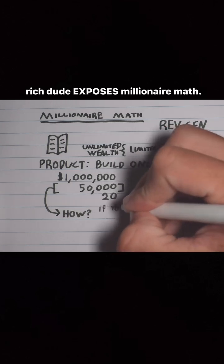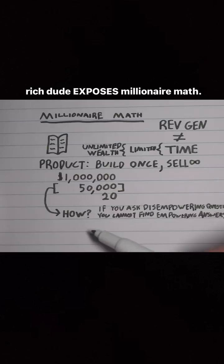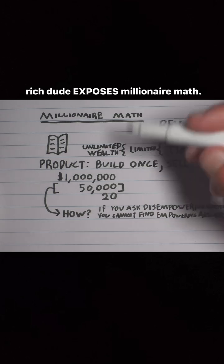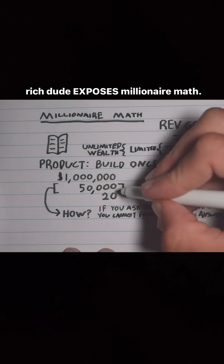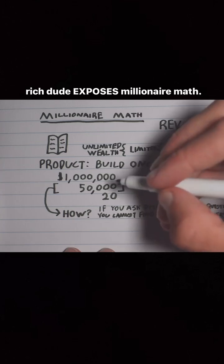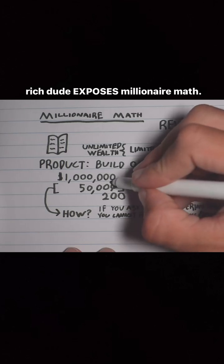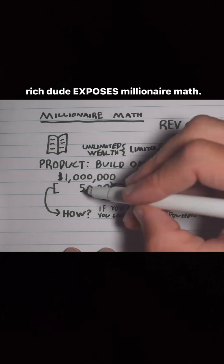There's a quote that says if you ask disempowering questions, you cannot find empowering answers. So instead of saying I don't know how to get 50,000 customers, you need to start asking how you're going to get 50,000 customers. Here's where some serious millionaire math comes into play. If 50,000 sounds like too big of a number, all you have to do is add one zero to the $20, and that takes away a zero from the 50,000, making it 5,000.